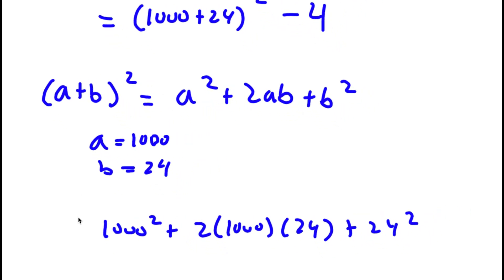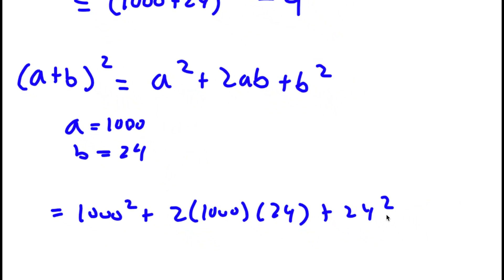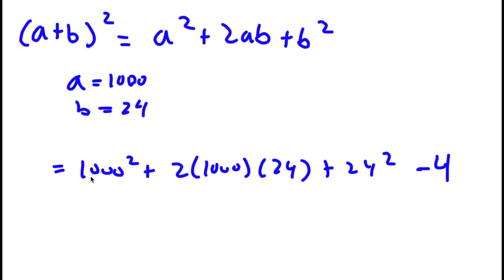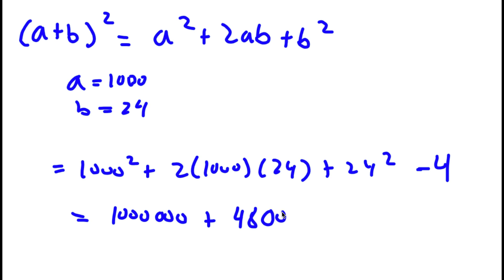And then I have my minus 4 at the end. Now, 1,000 squared is equal to 1,000,000. 2 times 1,000 is 2,000, and 2,000 times 24 is going to be 48,000. And 24 squared, that's going to equal 576.